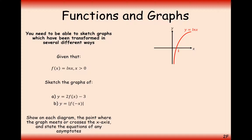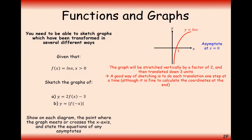We need to sketch the graph 2f(x) minus 3. We've got two transformations that are both affecting the y-coordinates, so it's important that you times by 2 first following BODMAS, and then move it down by 3. A good way of sketching is to do each transformation one step at a time, although it is fine to calculate the coordinates at the end. So let's do the first transformation: stretching up by a scale factor of 2. Then we'll move it down by 3.